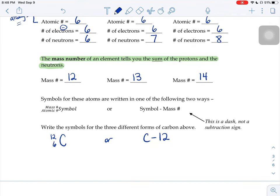Those other forms of carbon, 13, six, C, or carbon 13. And the last one, 14, six, C, or carbon 14.